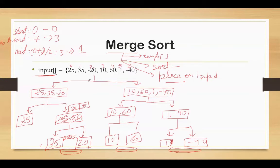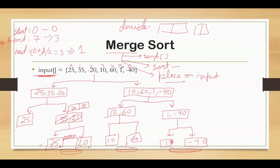One important point: during the divide phase we do not split into actual new arrays. The input array remains static, and with the help of indices we divide it logically into smaller fragments. This helps save memory space, since it is only the merge phase that creates temporary arrays and increases space complexity. Coming back to our example — after sorting 35 and -20 and placing them back, the input array looks like: 25, 20, 35, 10, 60, 1, -40.